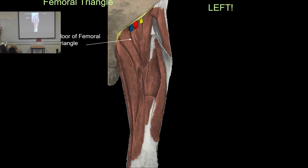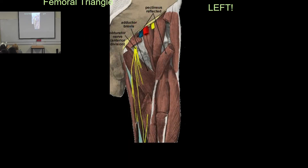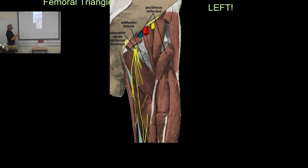The floor of the femoral triangle is made up of muscles. Below the muscles we have the obturator nerve coming in. So going from anterior to posterior we have the femoral nerves, veins, and arteries, then muscles, then the obturator nerve. Learning structures in terms of what is superficial versus deep, and anterior versus posterior to various other structures, is as useful as learning medial versus lateral.